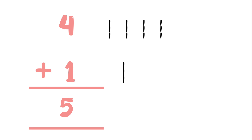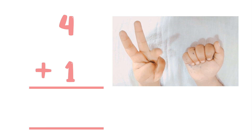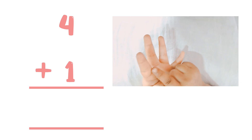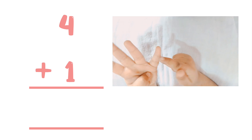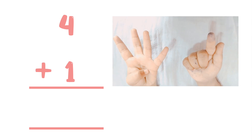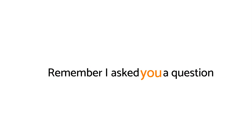Four plus one equals what? Draw four lines: one, two, three, four. Add one more line. Count them together: one, two, three, four, five — yes, five. The answer is five. You can also do this with your fingers: one, two, three, four — then one more — one, two, three, four, five. Yes, the answer is five.